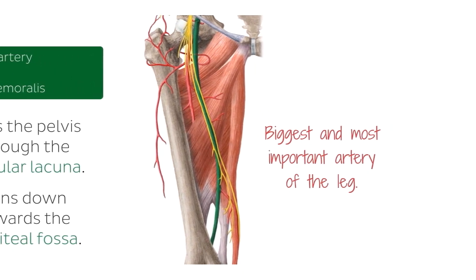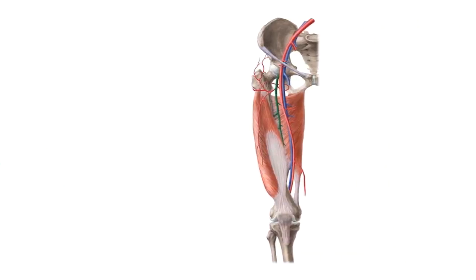Here you have a broader view of the femoral artery highlighted in green — remember we discussed this just before. We're still looking at it from an interior view. You can also see the inguinal ligament, and once the artery crosses it toward the thigh, it becomes the femoral artery.